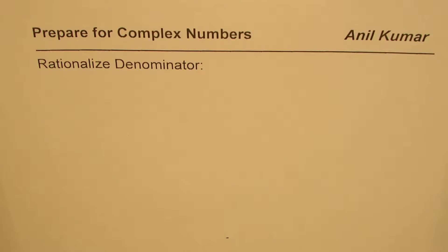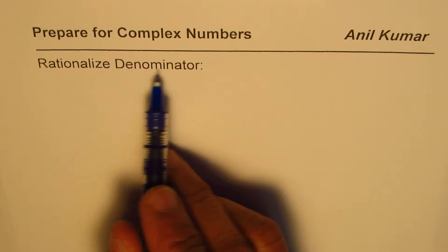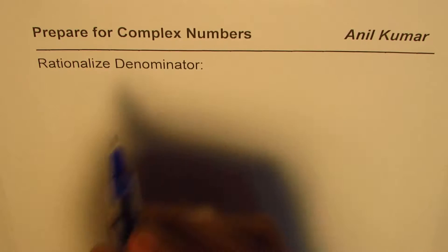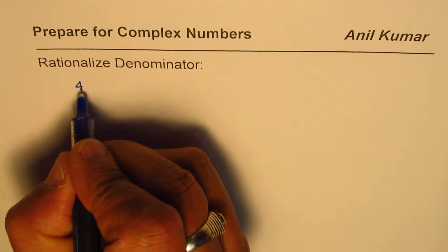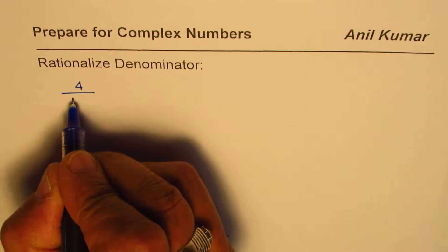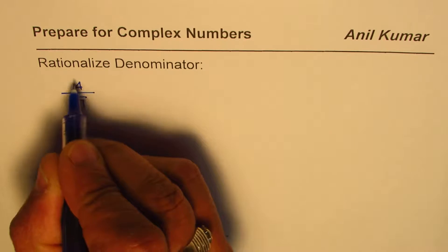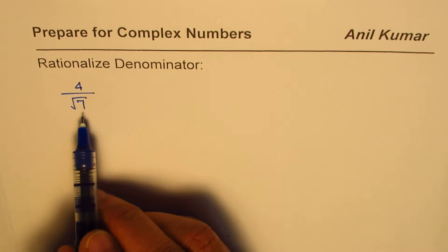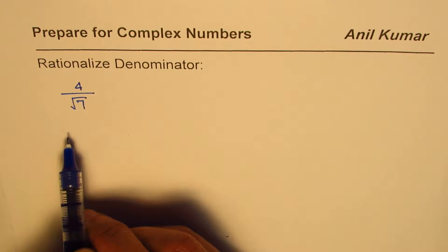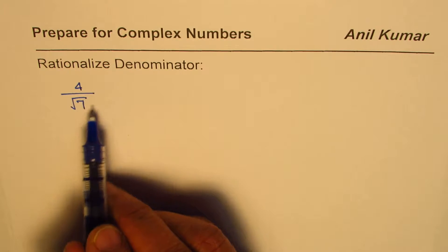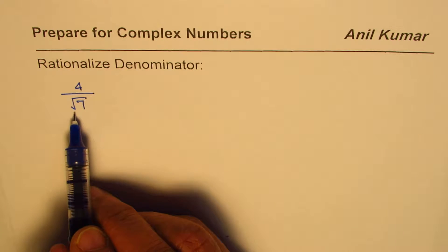I'm Anil Kumar, let us prepare for complex numbers. We will review what we learned about rationalizing denominators. We'll take a few examples. We can have 4 over square root of 7, right? We need to rationalize this. Basically, when we are trying to rationalize, we multiply in a manner so that we get rid of the square root part from the denominator.